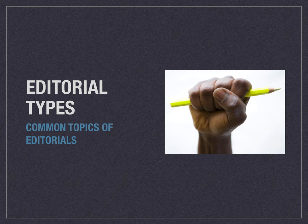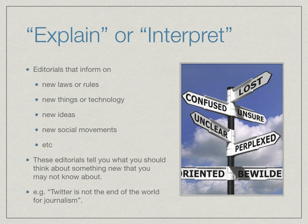So what are the most common types of editorial? The first is the explain or interpret editorial. It focuses on new laws, new rules, new technology, new ideas, or new social movements, trying to make sense of them so you can form an opinion. These editorials tend to explain things clearly and present a balanced point of view before coming down on one side or the other. For example, an editorial on why Twitter is not the end of the world for journalism would make the case that Twitter is really useful — another tool for journalists rather than the end of the world.